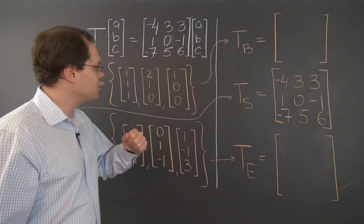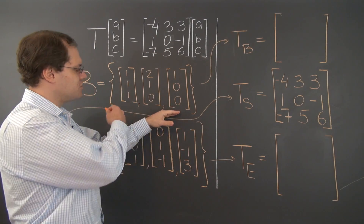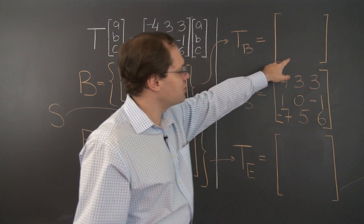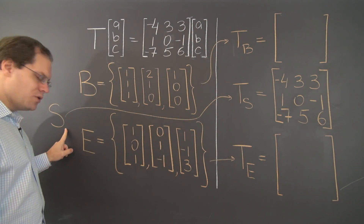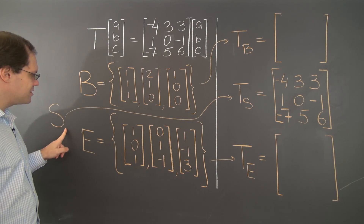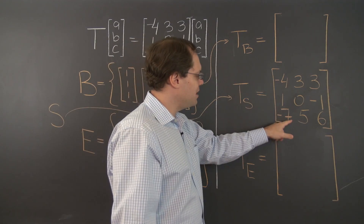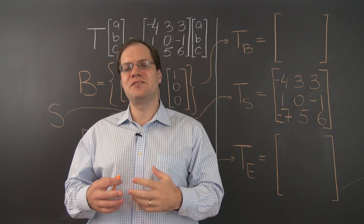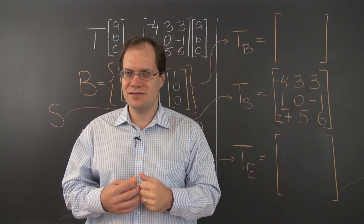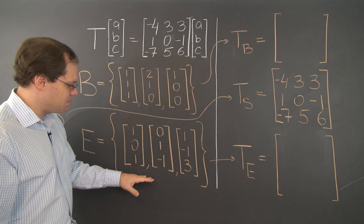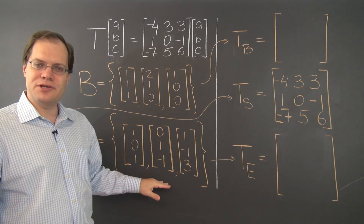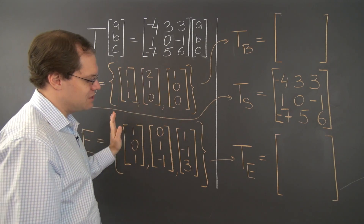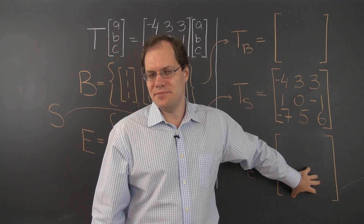So here's what we're going to do. We're going to consider the very same arbitrary basis as we did for the original linear transformation and compute the corresponding matrix. Then we'll consider the standard basis, which of course leads to a matrix that's exactly the same as the matrix that defines the linear transformation — that's the very special property of the standard basis. And finally we consider this basis, which looks random at first, but then we'll realize that these are actually the eigenvectors of this linear transformation, which will lead to a diagonal matrix.